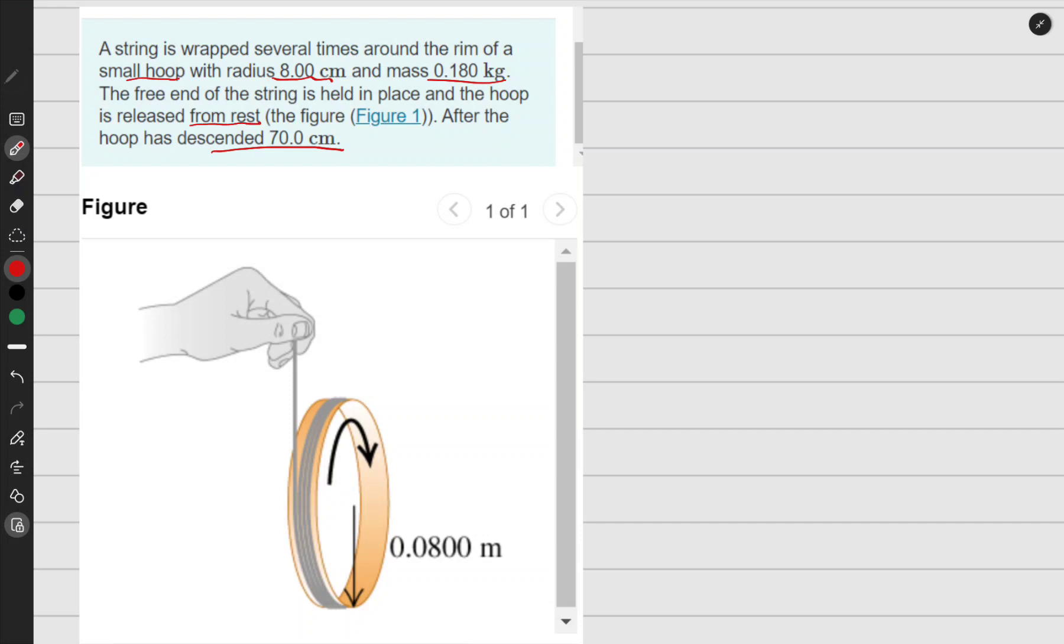I have 8 centimeters, which converts to 0.08 meters. The mass is already in kg, that's good. This one is 7.00 centimeters, which converts to 0.07 meters. So I have all my units good now, all in meters, so I can start thinking of the problem.